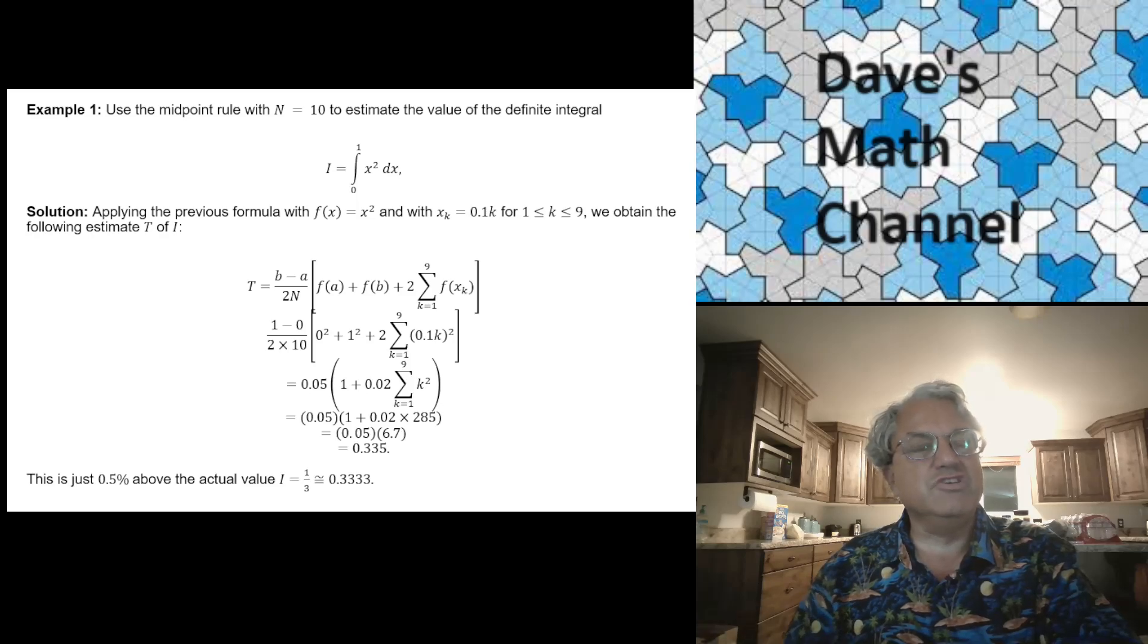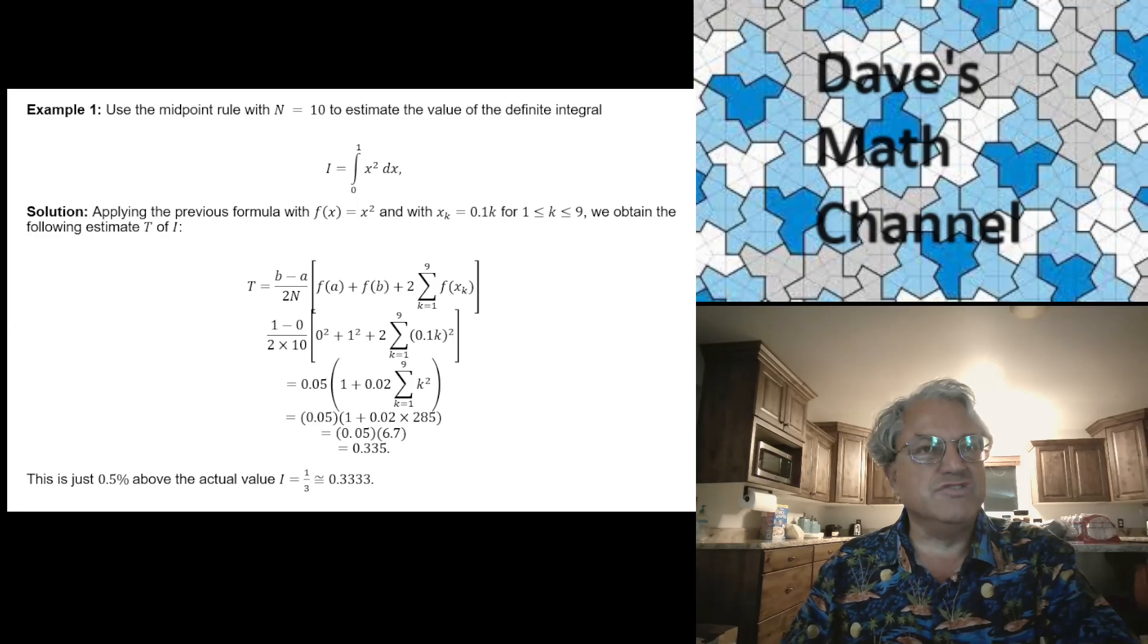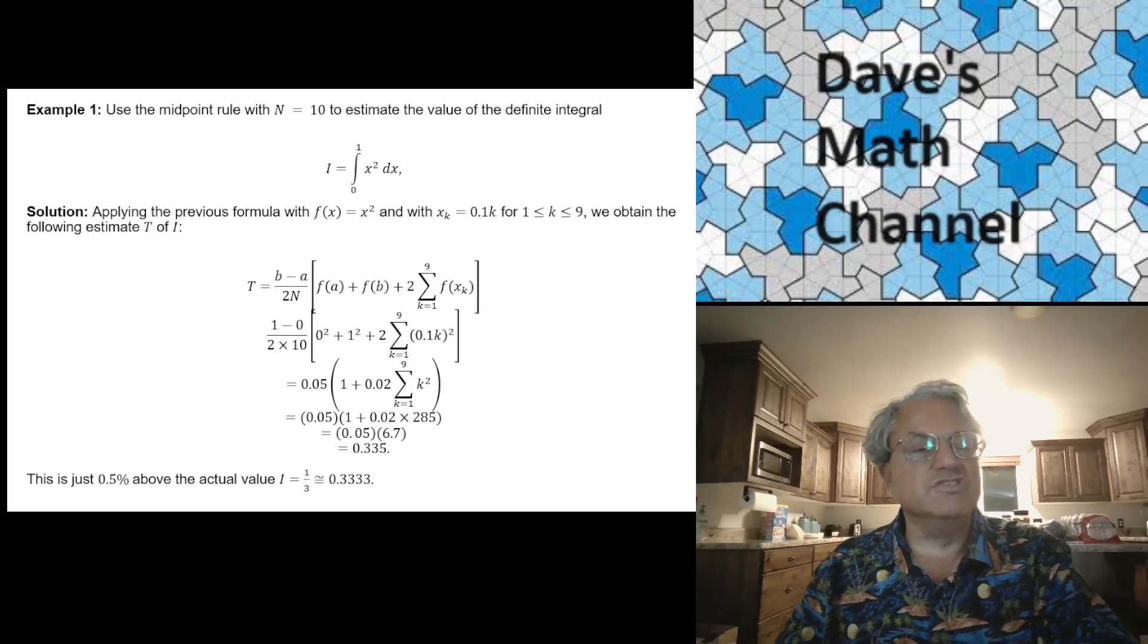But then when you actually plug in the numbers, I'm not going to go through every step of this calculation. When you're done with all this calculation, you get 0.335. And that's very close to the actual answer. That's only off by half a percent. It's half a percent too large. I don't think it's too hard to see why it's a little bit too large. If you approximate these parabolic subregions by trapezoids, you'll see that the lines you get for the trapezoids, for the tops of each trapezoid, always overestimate the value of the parabola. So it's not too hard to see why you get an overestimate.